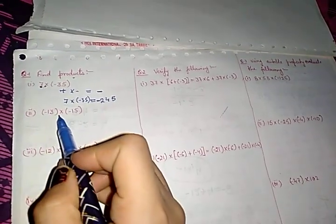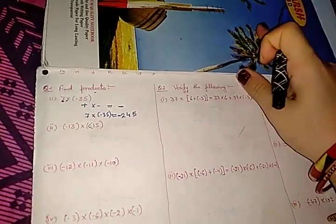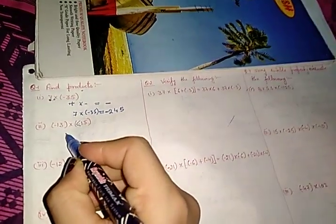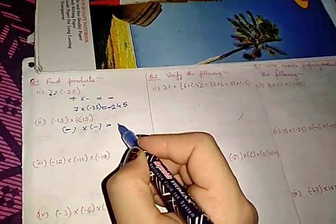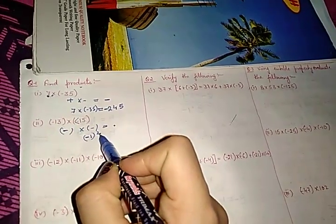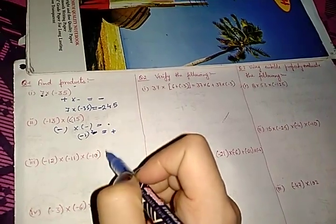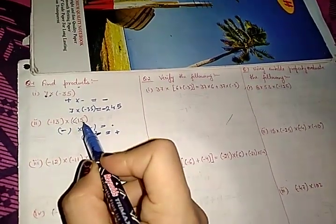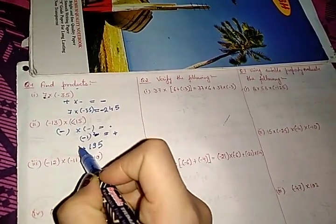Now see here: minus 13 times 15. Both have negative sign — we can think of this as (-1)² since there are two negative numbers, and the power 2 is even, so our answer will be positive. Multiply 13 into 15, you will get 195. Your answer will be plus 195.